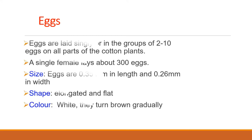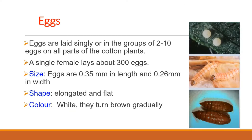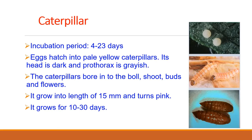Eggs are laid singly or in groups of 2 to 10 on all parts of the cotton plant. A single female lays about 300 eggs. They are wide, flat, and oval — very minute at 0.35 mm in length and 0.26 mm in width, making them difficult to find on the plant. The caterpillar emerges in about 7 days. When they emerge, they are about 1 mm in length and white in color with dark heads.